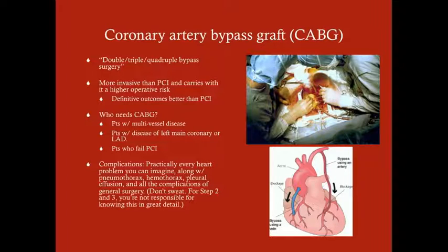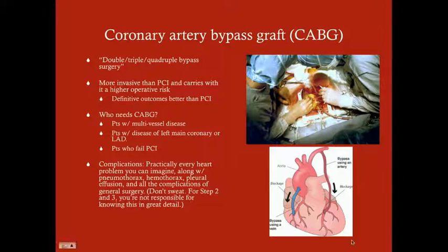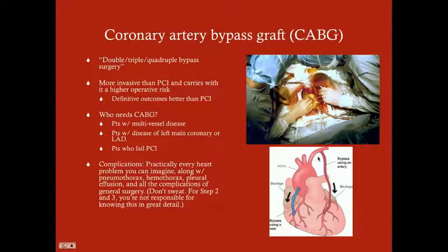In CABG, you harvest a vein or artery — often the saphenous vein from the leg or the radial artery from the arm — and use it to create a bypass around the blocked coronary segment. The donor vessels in the arms and legs have redundant circulation, so those areas maintain perfusion without them. As shown here, you can bypass the LAD by connecting an artery from the subclavian to the LAD, or by connecting a graft from the aorta to the right coronary artery — creating a new route for blood flow.